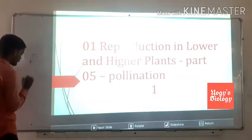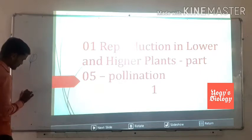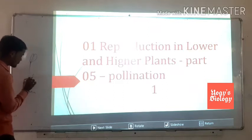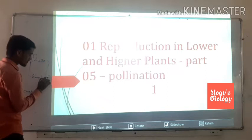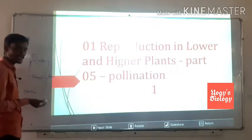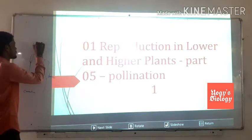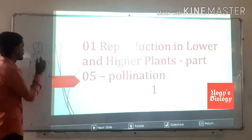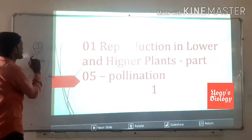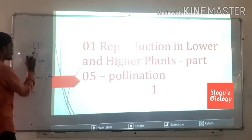The structure of the anther: the anther consists of a connective filament, and the anther together with the filament is called the stamen, which is the male reproductive organ. In the transverse section of the anther, there are two types — dithecous and monothecous anther. The dithecous anther has a double layer. When the anther is matured, it disperses the pollen grains.